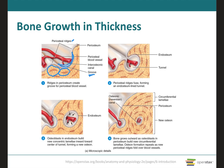Eventually, the ridges fold together and fuse, so the groove becomes a tunnel that encloses the blood vessel. The former periosteum now becomes the endosteum that lines the tunnel, because it is inside the tunnel. The osteoblasts in the endosteum deposit bone extracellular matrix, forming new concentric lamellae, and the formation of additional concentric lamellae proceeds inward toward the periosteal blood vessel.